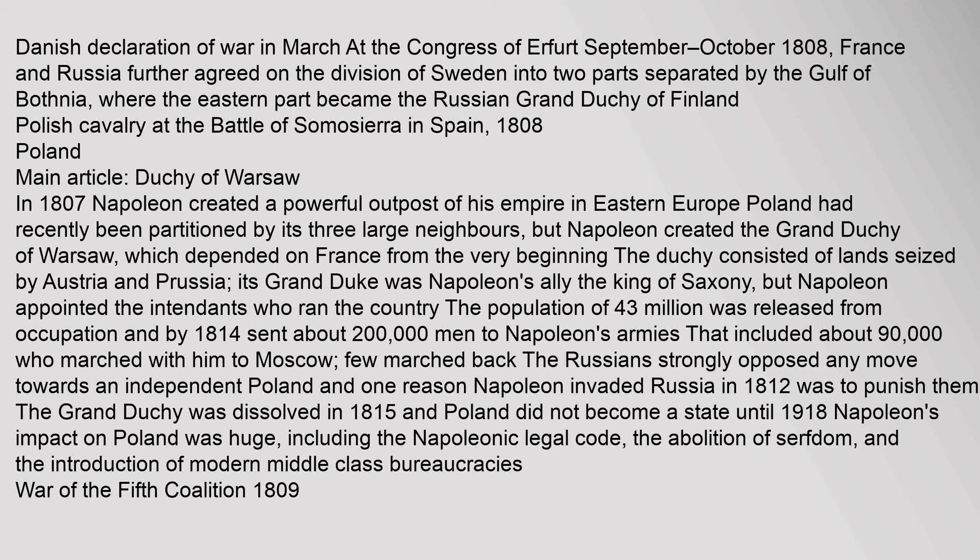In 1807, Napoleon created a powerful outpost of his empire in Eastern Europe. Poland had recently been partitioned by its three large neighbors, but Napoleon created the Grand Duchy of Warsaw, which depended on France from the very beginning. The duchy consisted of lands seized by Austria and Prussia; its Grand Duke was Napoleon's ally, the King of Saxony. The population of 4.3 million was released from occupation, and by 1814 sent about 200,000 men to Napoleon's armies, including about 90,000 who marched with him to Moscow — few marched back. Napoleon's impact on Poland was huge, including the Napoleonic legal code, the abolition of serfdom, and the introduction of modern middle-class bureaucracies.